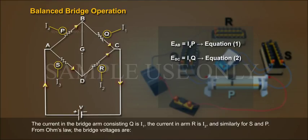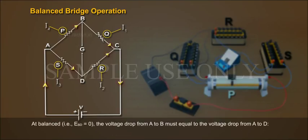EAD equals I3S, Equation 3; ECD equals I2R, Equation 4. At balanced, that is EBD equals 0, the voltage drop from A to B must equal the voltage drop from A to D.